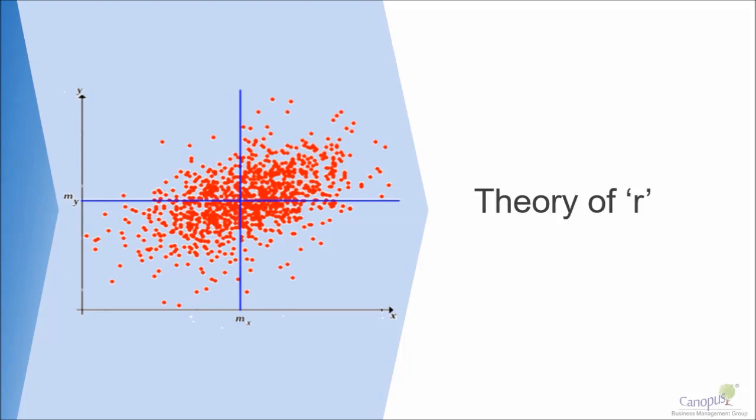For values greater than 0.8, either 0.8 on the positive side or 0.8 on the negative side, we consider the data to have a strong correlation.